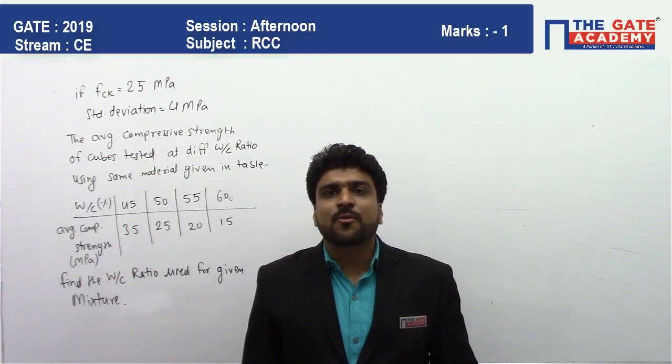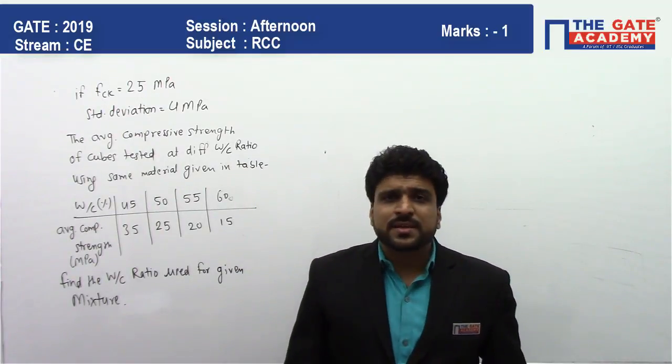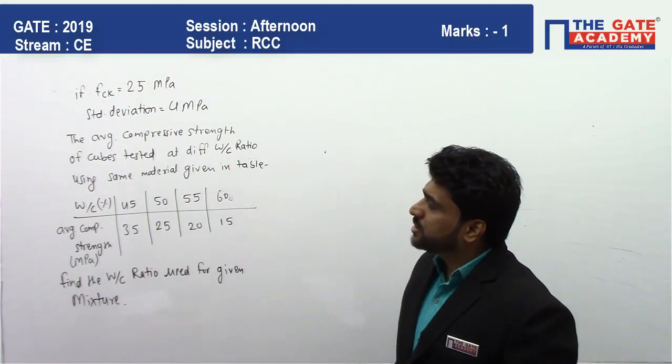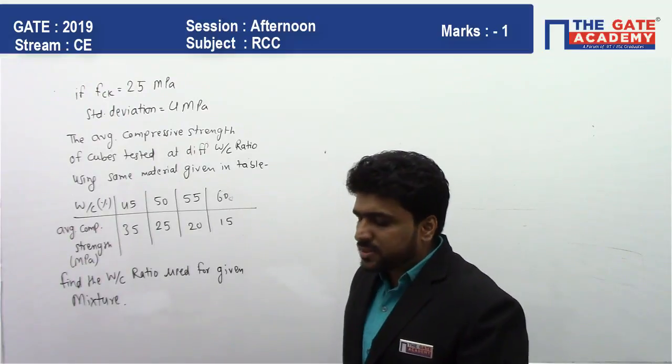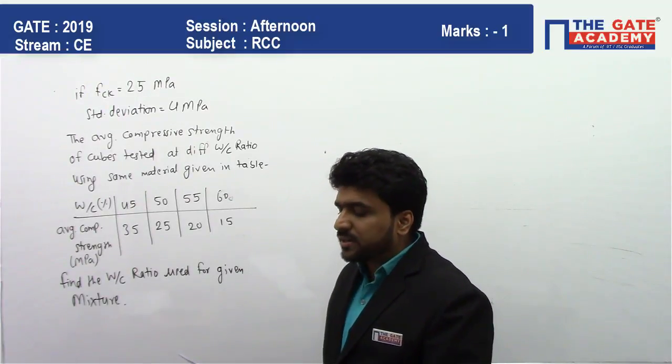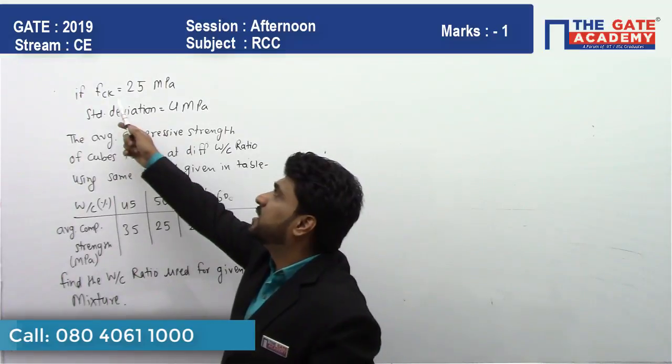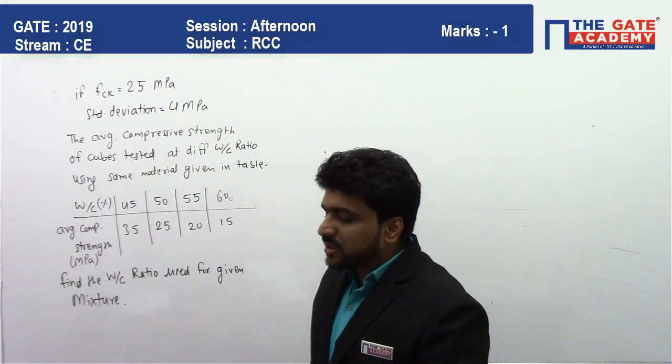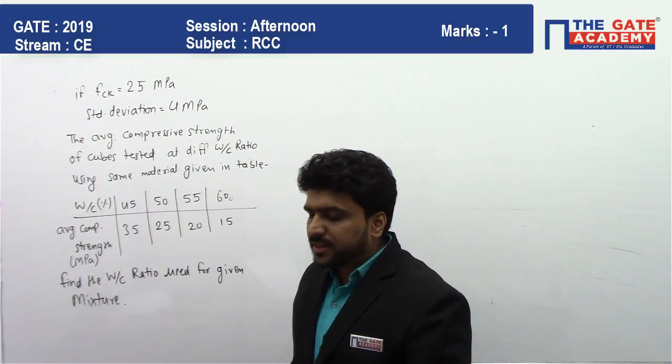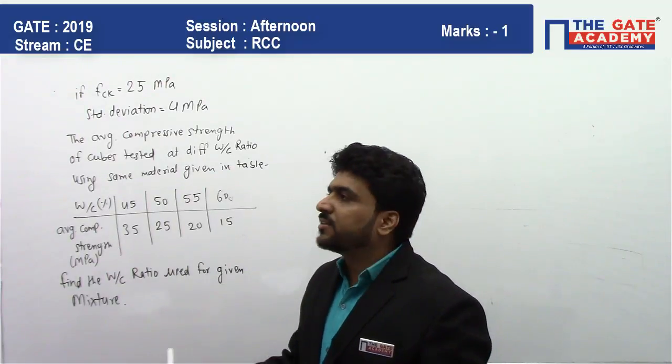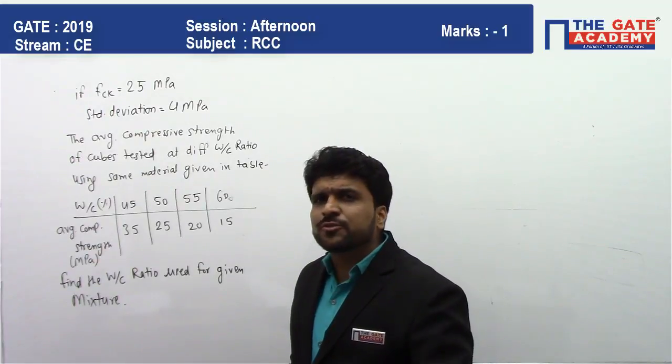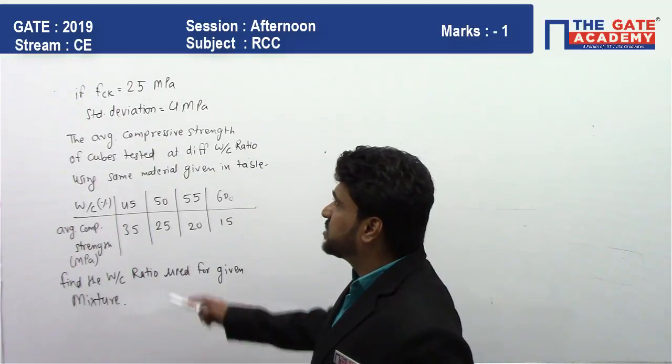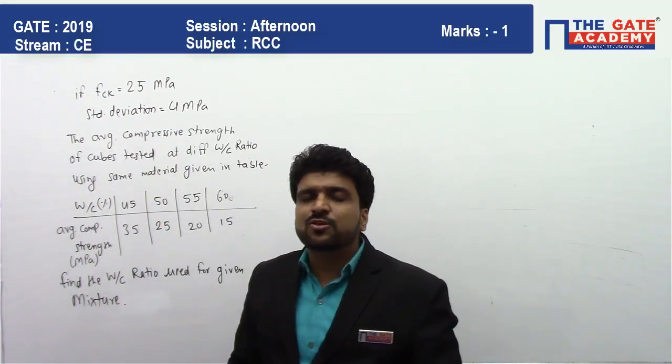The question is from RCC and the topic is basic introduction to RCC. In the question, the corrective compressive strength of concrete required in a project is 25 MPa, meaning the given data is FCK equals 25 MPa. The standard deviation of observed compressive strength expected at a site is 4 MPa, meaning they have tested a lot of cubes for the complete process and found the standard deviation for this test is 4 MPa.